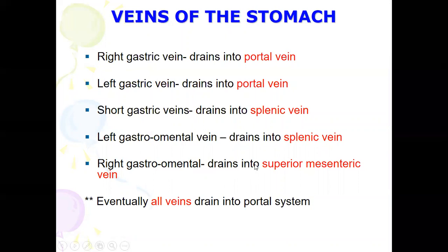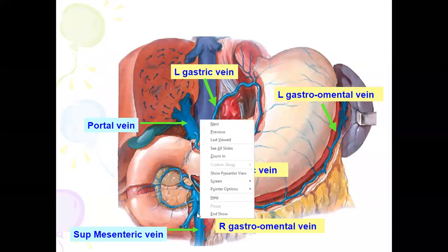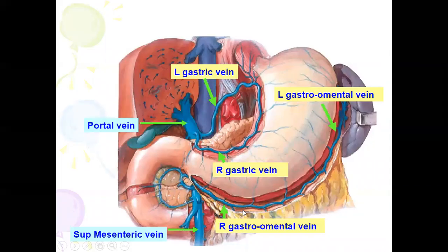The right gastro-omental vein drains into the superior mesenteric vein. But eventually, all the veins will drain into the portal system — that is the most important thing. Finally, all veins drain into the portal vein.